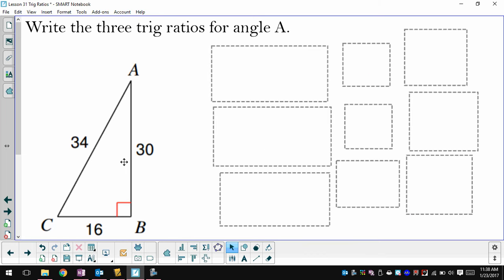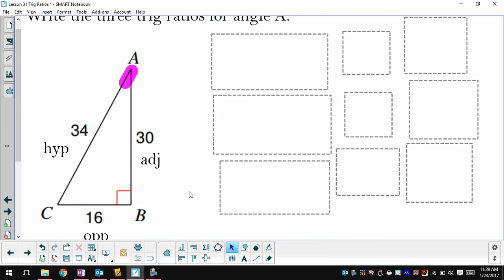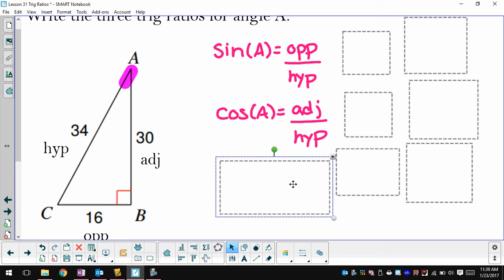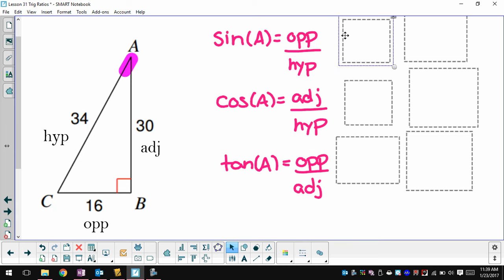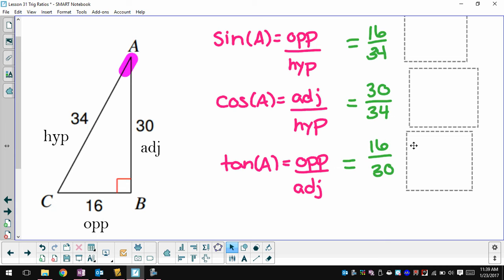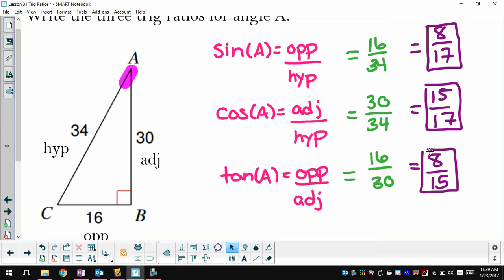So pause here. I want you to write the three trig ratios for angle A. So we're looking at this angle. So write sine of A, cosine of A, and tangent of A. Remember, you can use SOHCAHTOA to help you. So I'm going to label my sides. The one opposite of angle A is this one that's 16. The hypotenuse is 34, and the adjacent side is 30. Then I'm going to write my three trig ratios, my three formulas, and now I can just use these labels to help me plug the numbers in the appropriate spots. And then when I simplify all of these, I have sine, cosine, and tangent for angle A.